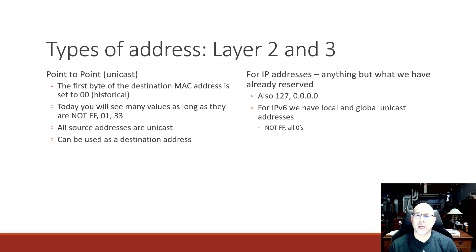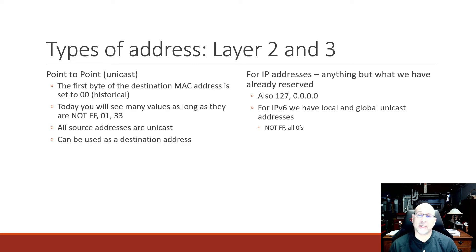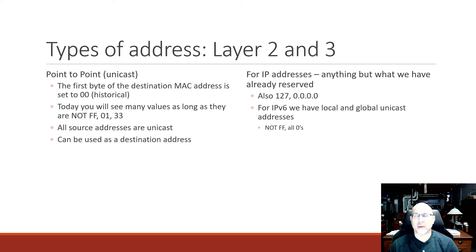127 is technically a unicast, but we don't see that on the network very often. And while all zeros is technically a unicast address because hosts use it, everybody also uses it, so you don't assign this to somebody. In IPv6, we have two flavors of unicast address: global unicast addresses and link local — but that's a whole IPv6 topic.